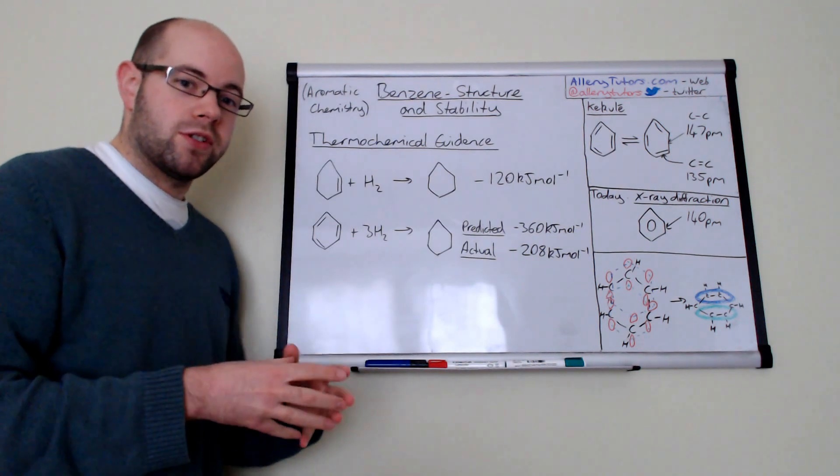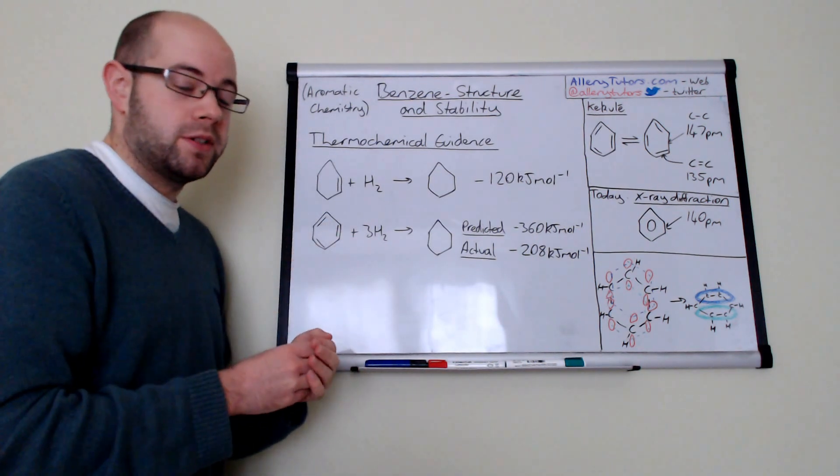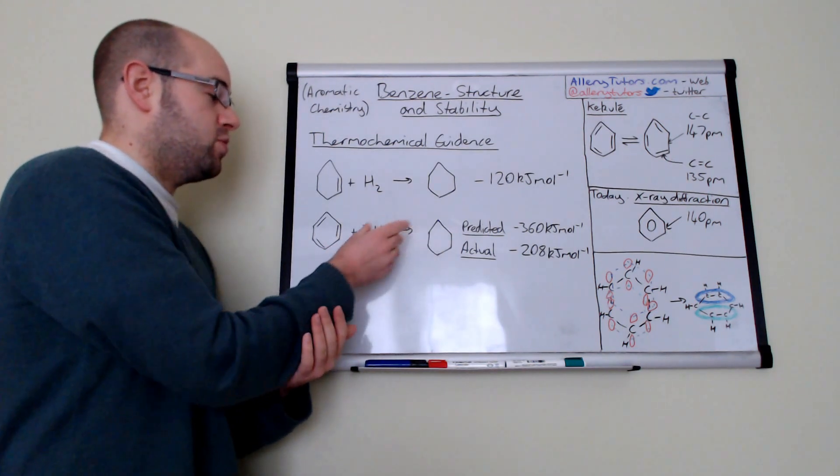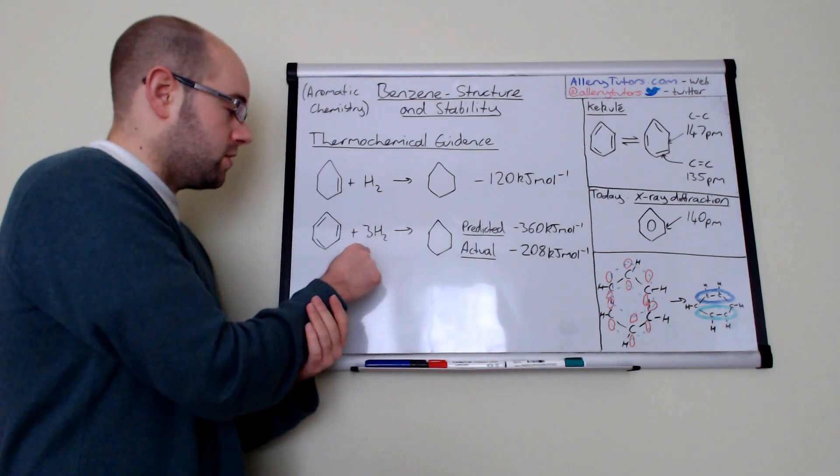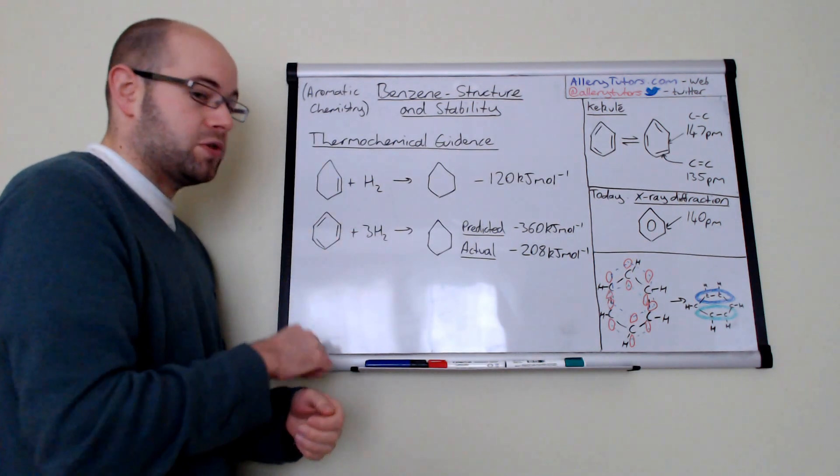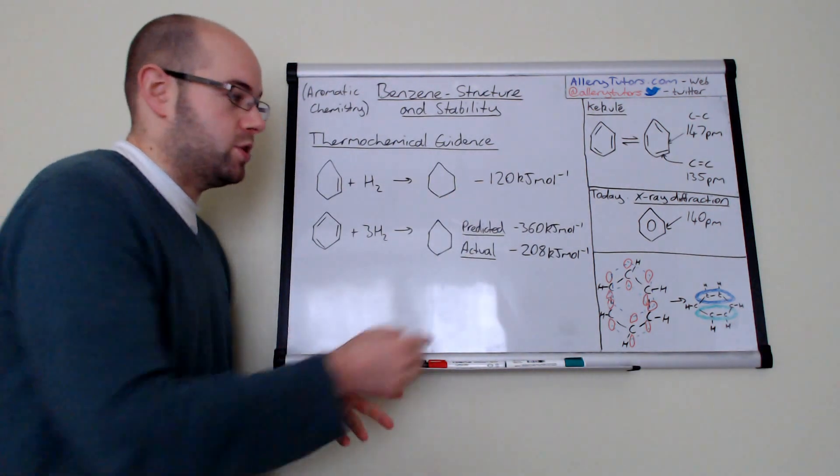This is given a value of minus 120 kilojoules per mole. Now if Kekulé structure was correct, then Kekulé structure has three double bonds, and in theory we should have a predicted value of three lots of hydrogens. We need one hydrogen to react there, one hydrogen there and one hydrogen there. In theory that should be three times 120 which should give us minus 360 kilojoules per mole.